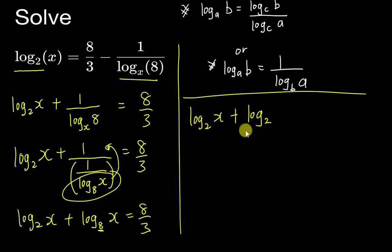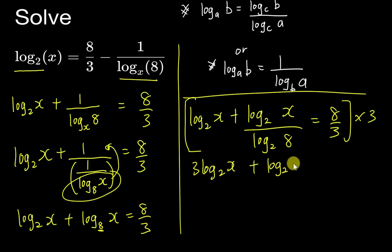I almost got the answer, but I want to change it to base 2. I will change base again, then I get log₂(x) plus log₂(8) over log₂(x) on the top, 8 at the bottom. This equals 8 over 3, and log₂(8) is equal to 3. I multiply the whole equation by 3, then I have 3log₂(x) plus log₂(x) equals to 8. You just imagine 3 apples plus one more apple, we have 4 apples. So 4log₂(x) equals 8, then log₂(x) equals 2, then x equals 2² which is 4.